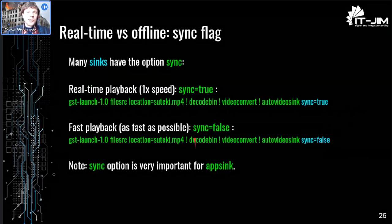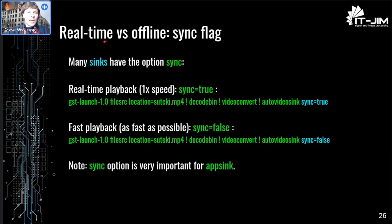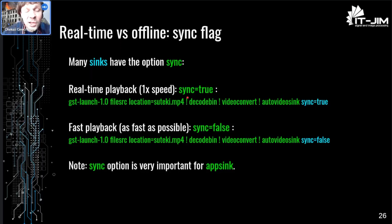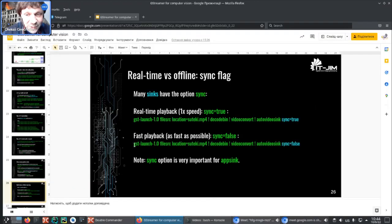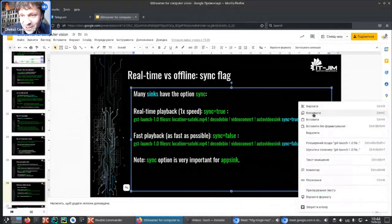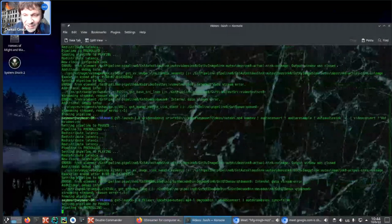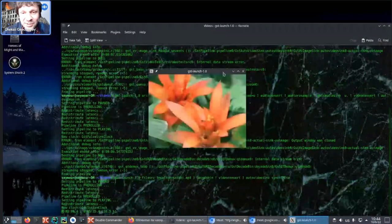Another very important topic is synchronization and the sync flag. Do we want to run our pipeline in real time or not? Many sinks have the option 'sync'. If you put sync=true in autovideosink, which is the default, the pipeline will be played in real time — 1x speed. That's what you usually want for a video player. On the other hand, if you want to do processing from file to file, you want to play as fast as possible — that corresponds to sync=false. Let's see — you can see there is no synchronization; the video plays very fast, as fast as the computer can decode.